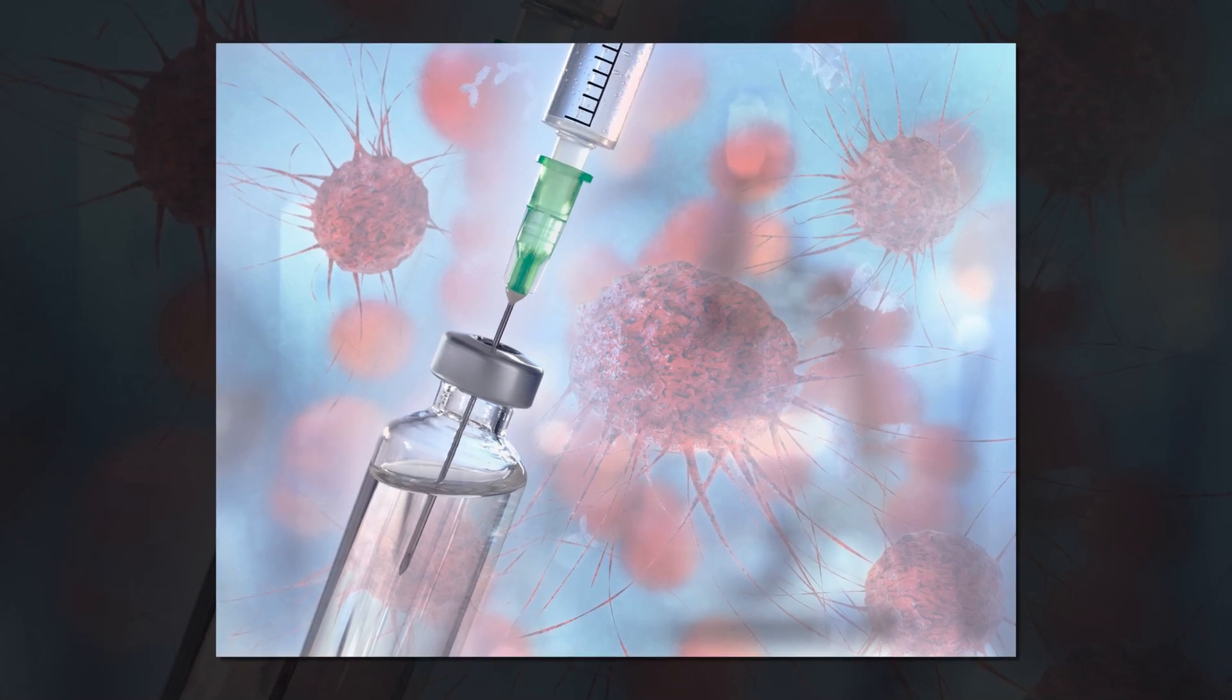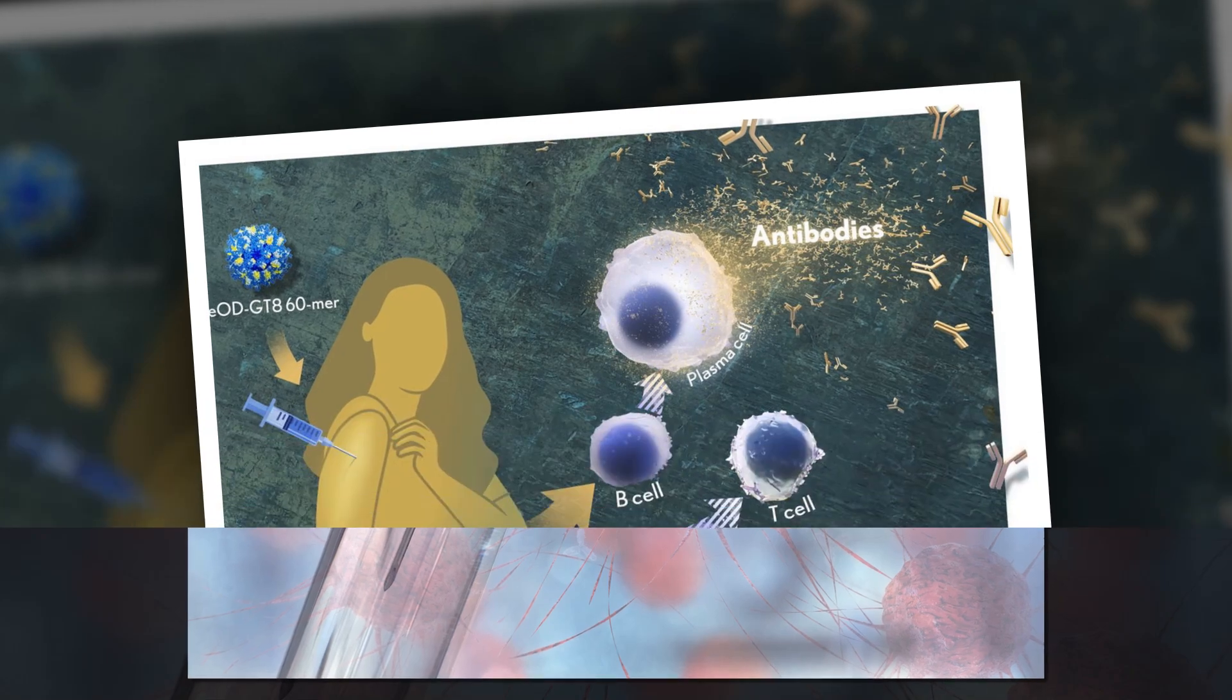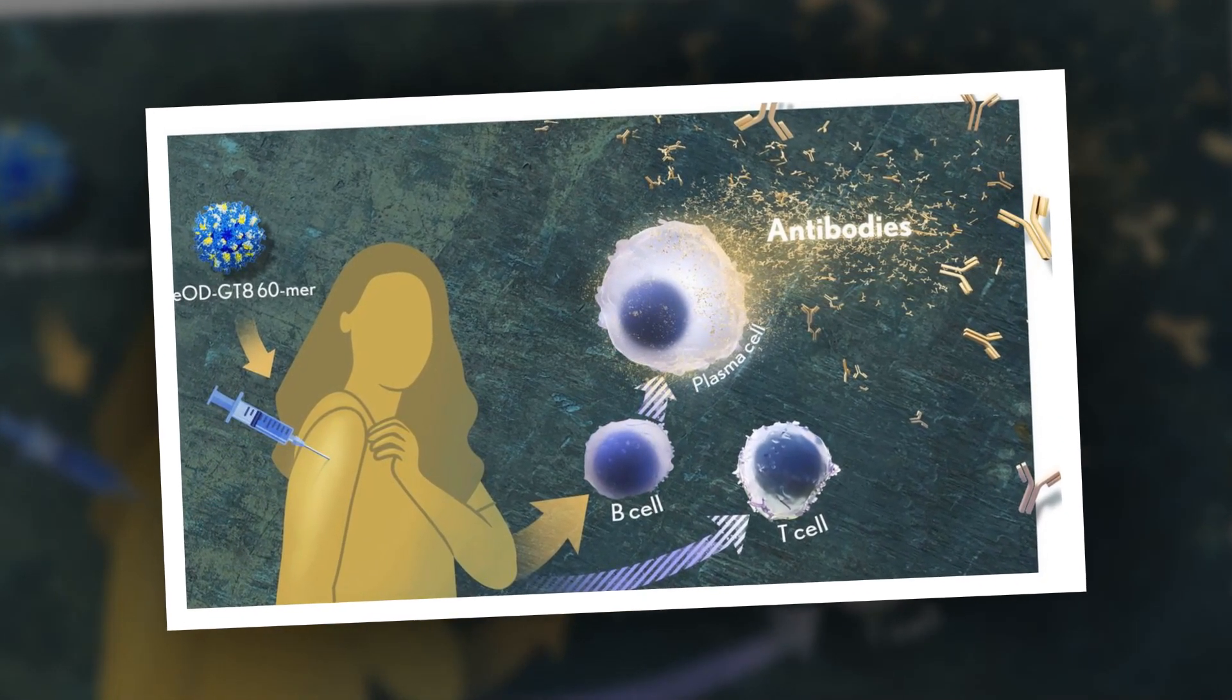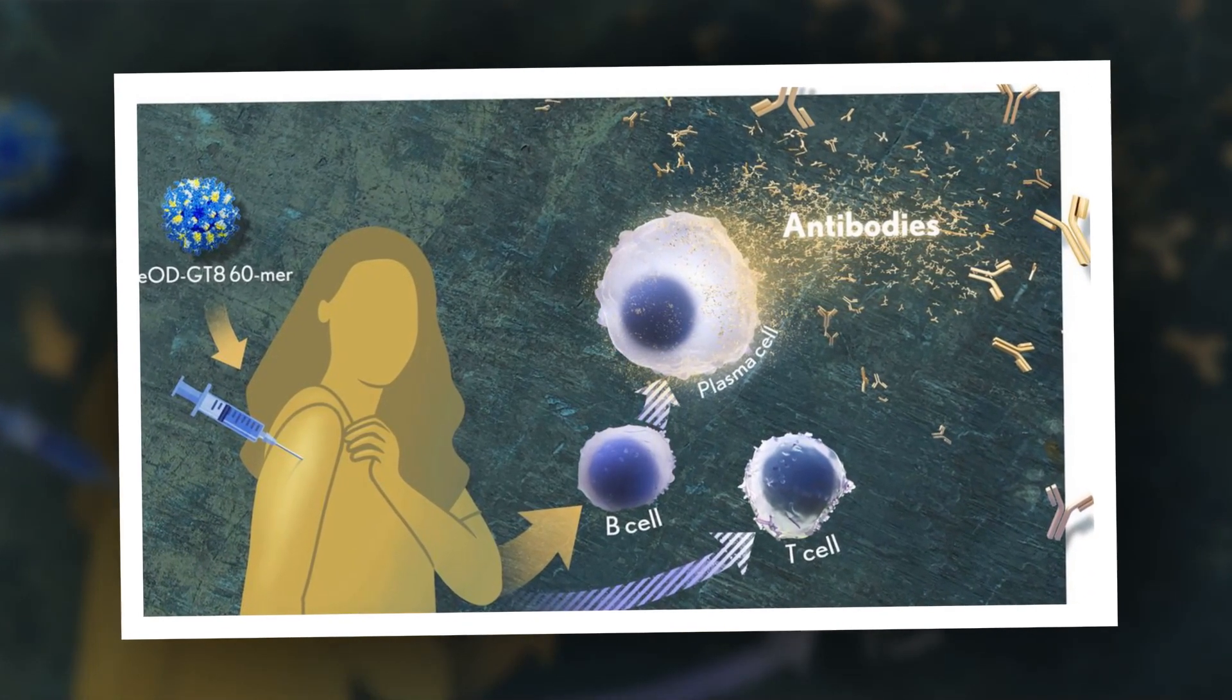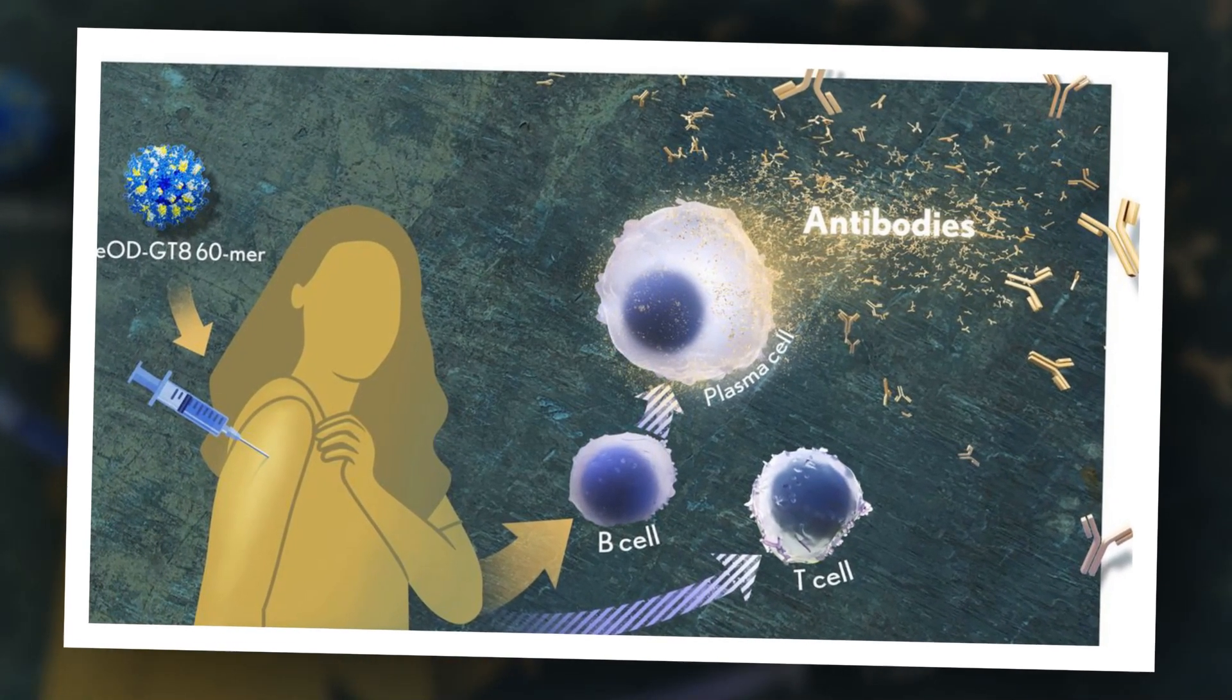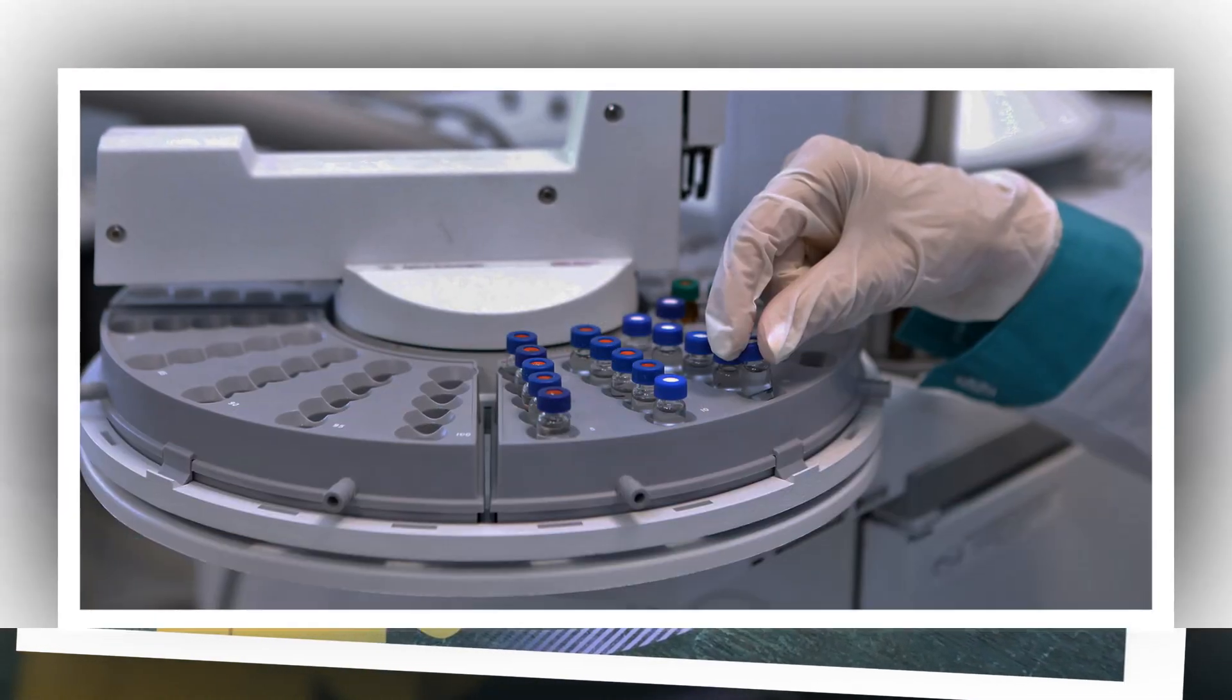People with HIV usually do produce antibodies against the virus, but these mostly target specific parts that are highly variable, so they don't recognize new viral mutations. What's more, the conserved parts of the virus envelope that don't change much as it evolves are well hidden and normally invisible to the immune system.